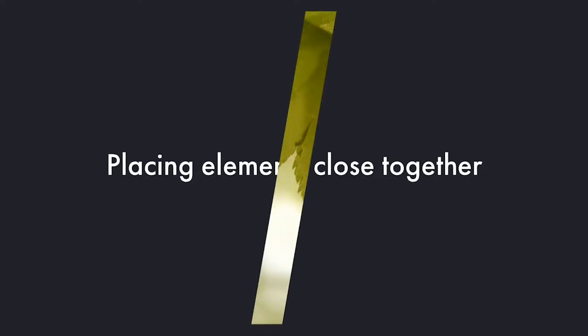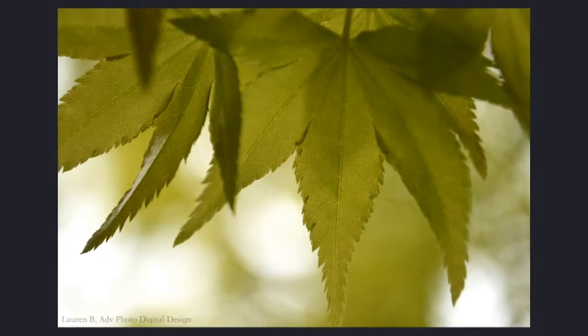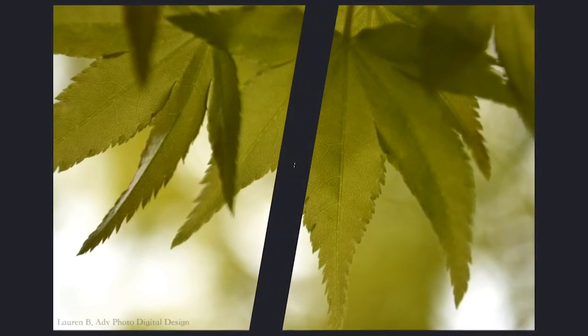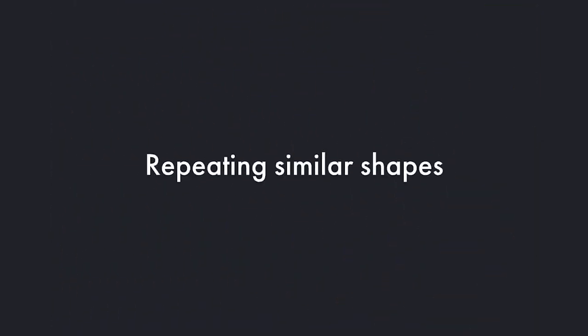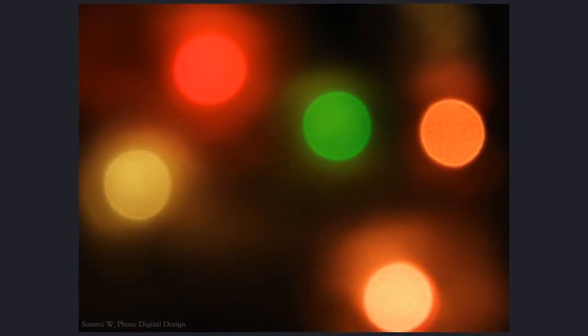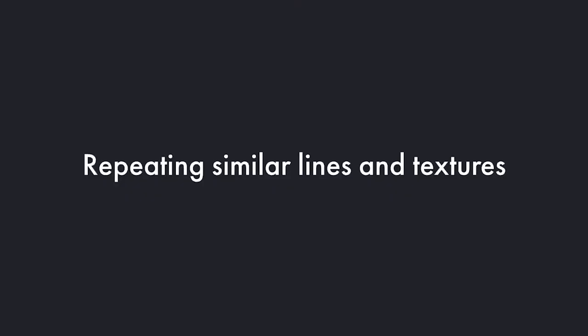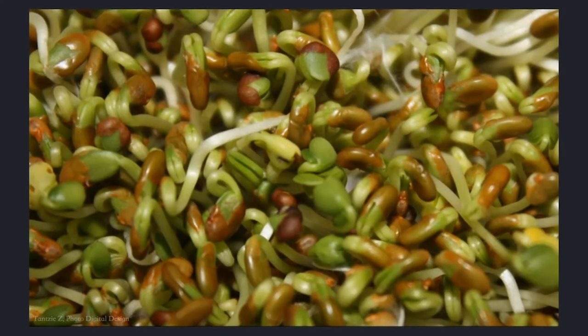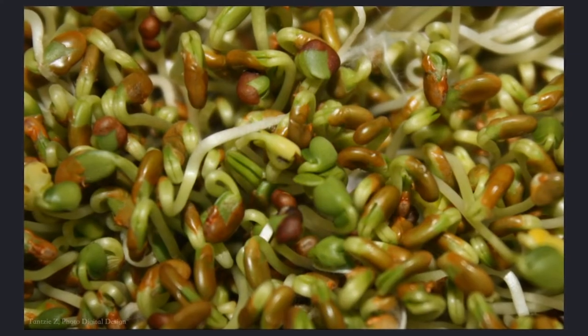Unity in a work of art can be accomplished by placing elements close together, such as these overlapping leaves, and repeating similar shapes or objects as seen in the out-of-focus bokeh lights. Repeating similar lines or textures, like the raw texture of these sprouts, also creates unity.